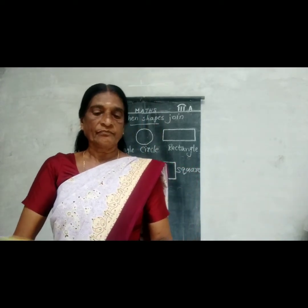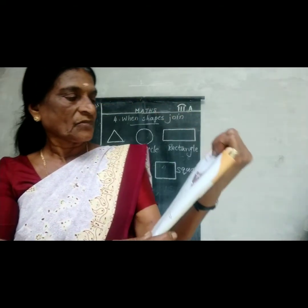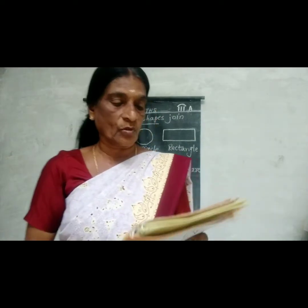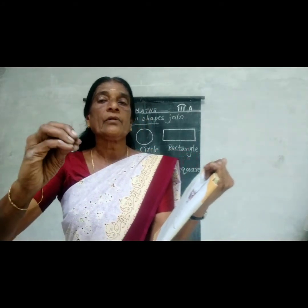Next page. Let us give color. Look at all the colors. Color the picture given below. Give blue color for triangles. You give blue color, and red for rectangles. Give red color to rectangles.